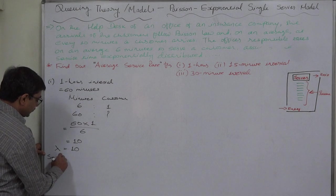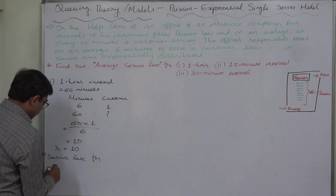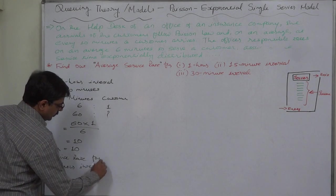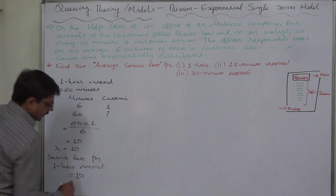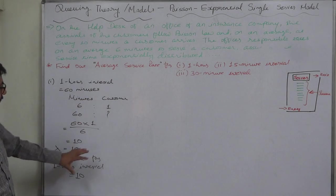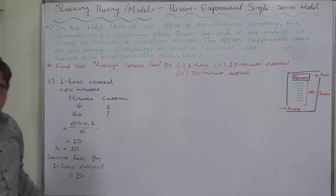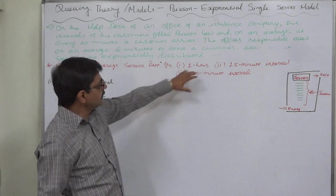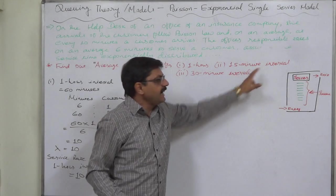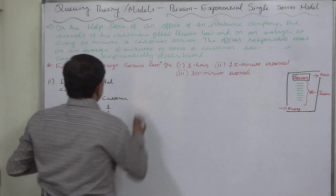Service rate for an hour or one hour period or one hour interval is 10. My advice: first calculate arrival rate or service rate for a standard unit of time like one hour, so that we can easily calculate the arrival rate or service rate for any other short or long unit of time.